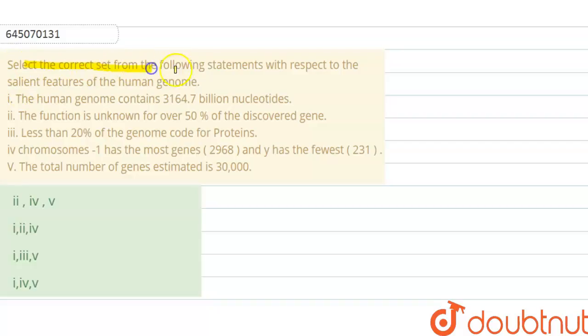the correct set from the following statements with respect to the salient features of the human genome project. First statement: human genome contains 3164.7 billion nucleotides. Function is unknown for over 50 percent of discovered genes. Less than 20 percent of genome code for protein, and chromosome 1 has the most genes and Y has fewest genes. Total number of genes estimated is 30,000.